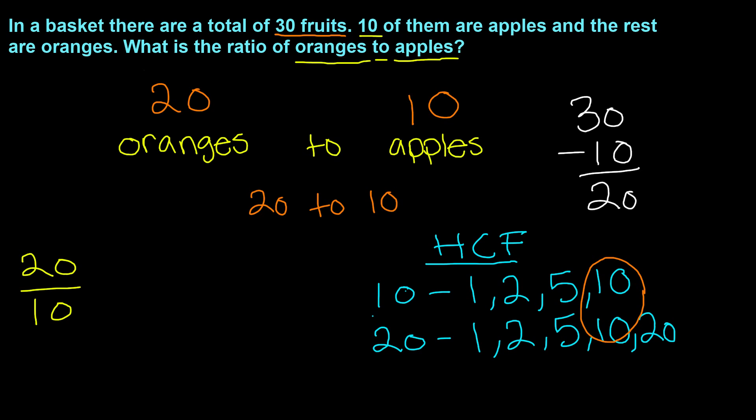So now we go back and now we divide 20 and 10 by the number 10. 20 divided by 10 and 10 divided by 10, and that gives us the fraction 2 over 1, which is going to be 2 to 1, and that is our simplified fraction of 20 to 10.